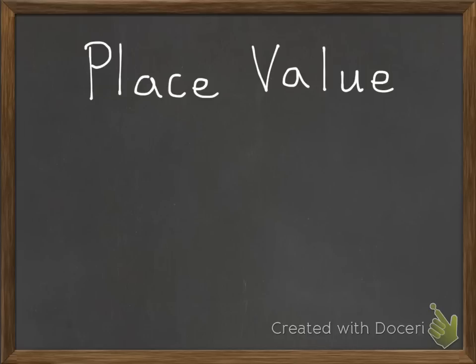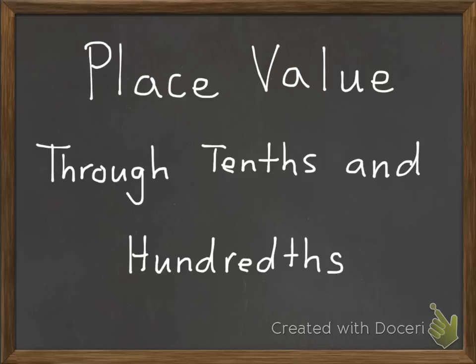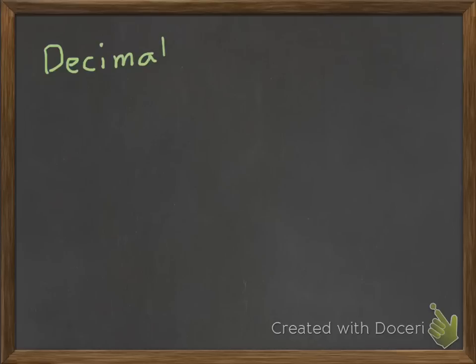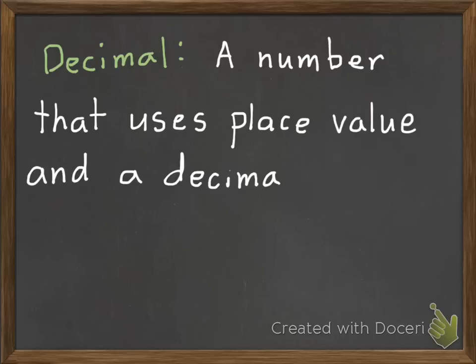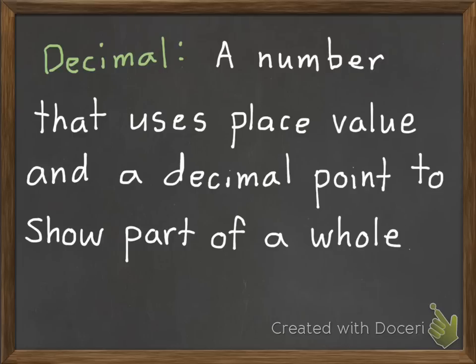Today we're going to learn about place value through tenths and hundredths. Our first vocabulary word is decimal. A decimal is a number that uses place value and a decimal point to show part of a whole.